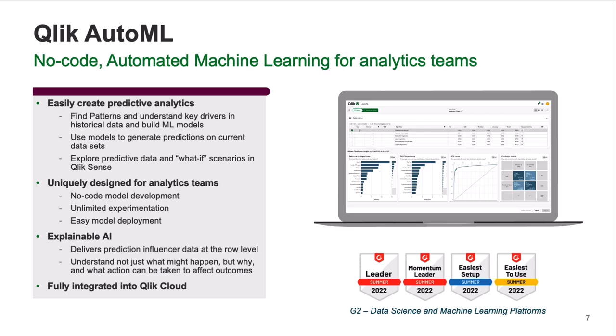You get unlimited experimentation and easy deployment of models within our platform. Explainability is also really unique for AutoML. You get not just what might happen, but also why it might happen. That comes in the form of what's called SHAP values. Those SHAP values give you the ability to see, for a particular record, here's what influenced the prediction and here's what you can do to take action and change that outcome. It's fully integrated into Qlik Cloud, so you get all the benefits of our analytics platform as well as all of our data integration capabilities.